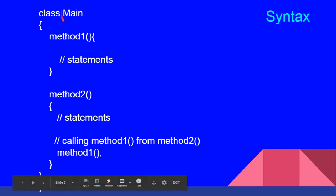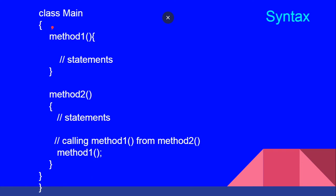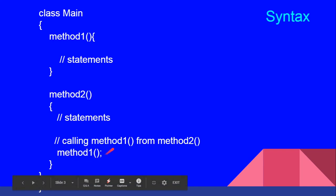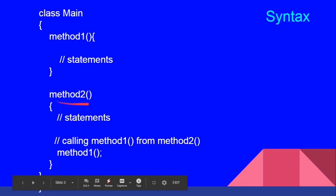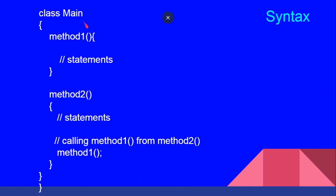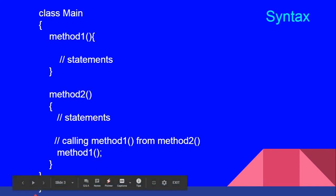Let us see the syntax. The main class contains method one with some statements, and then there is another method called method two with some statements. Inside method two, there is a call to method one — that is, method one's name is used to invoke it from within method two. Since both are in the same class, this is called nesting of methods. Then we close the braces for the main class.